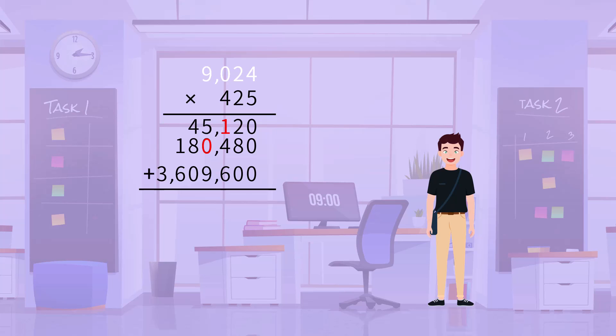And zero on the ten thousands place of 3,609,600. Thus finally, Jim found the total extra cost the company needed to pay was 3,835,200 dollars.